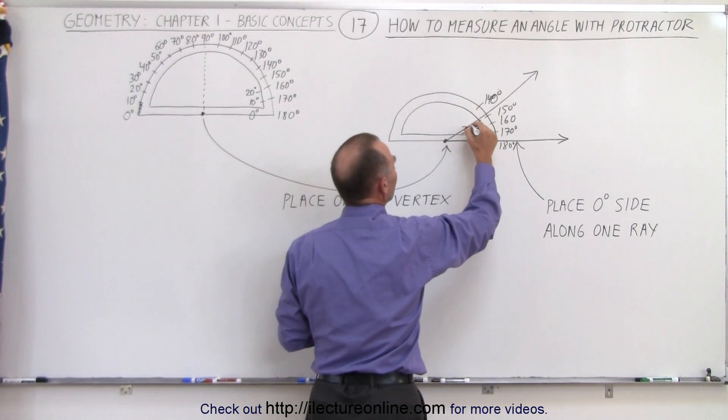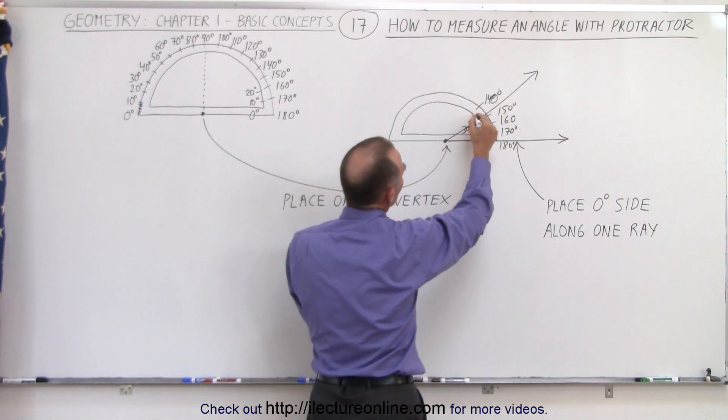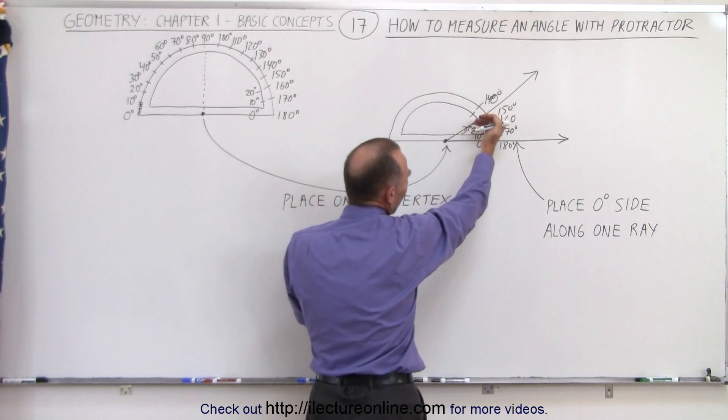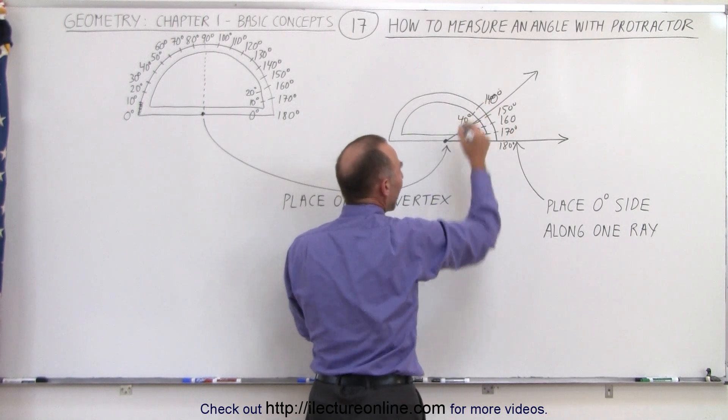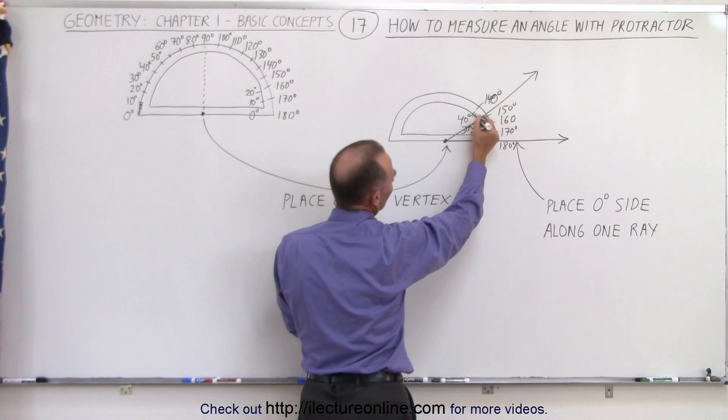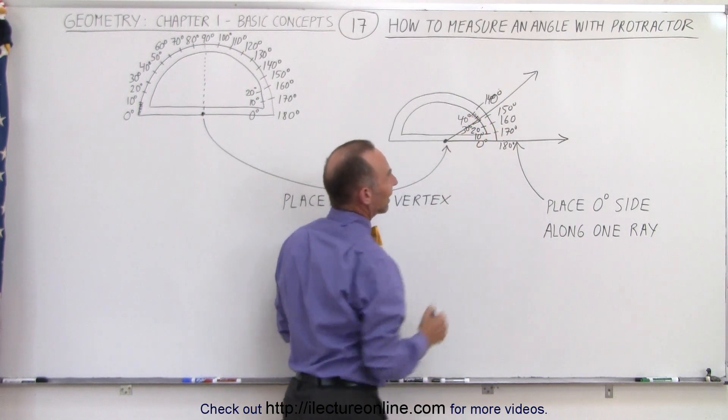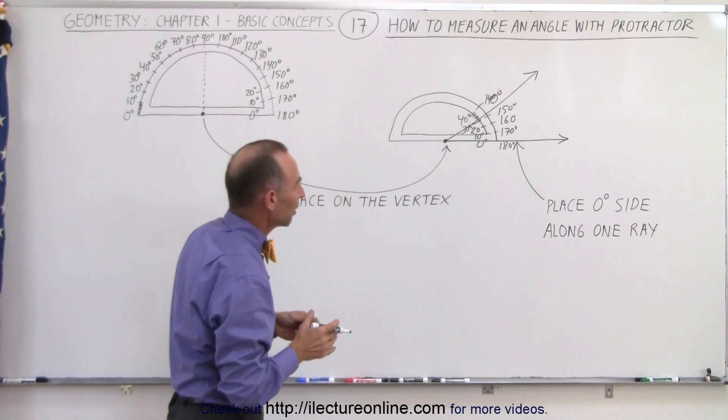Now on this particular example, notice that the 30 degrees is just shy of the ray right here, and then the 40 degrees is past it, so then you have to look at the small lines in between to figure out exactly where that angle measure is.